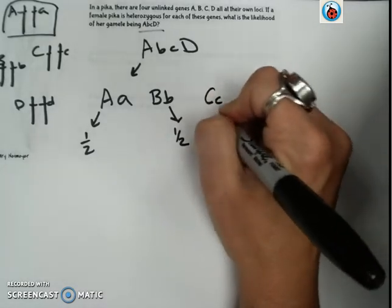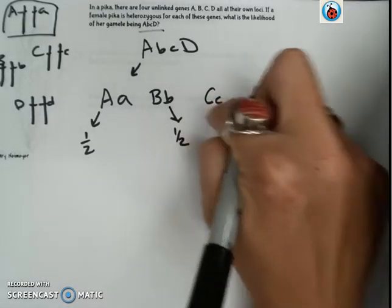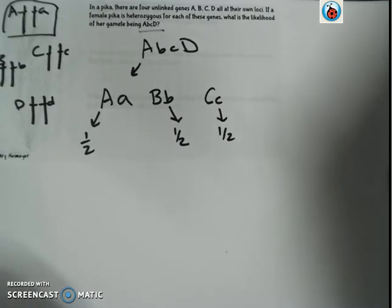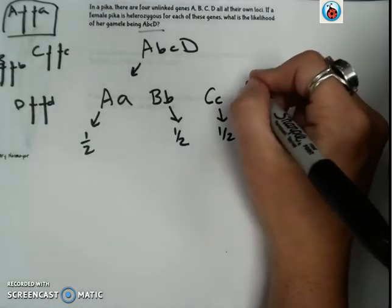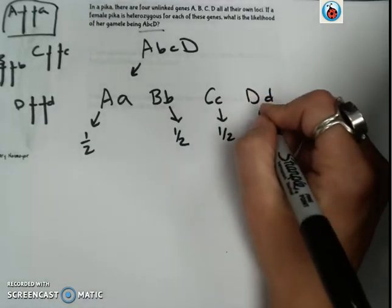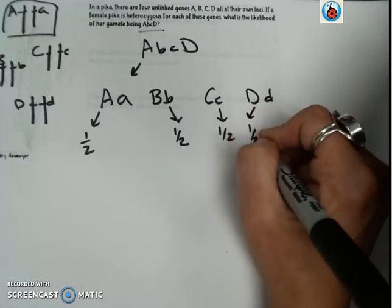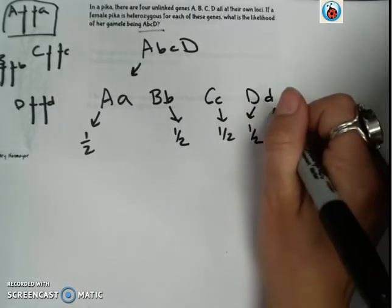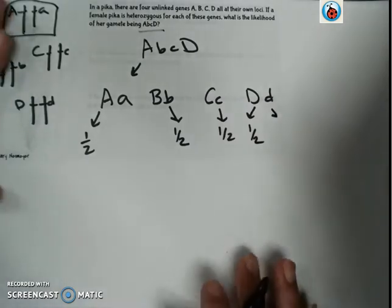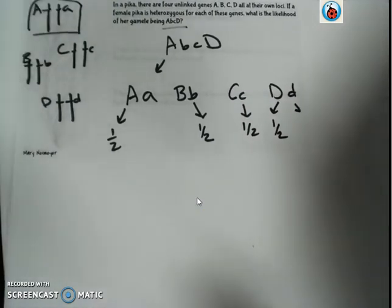She is also heterozygous for the C trait. And there is a one half chance it will inherit the recessive allele for C. And for D, again, one half chance that it will inherit the recessive allele for that. Now if you are thinking, why is there one half chance? I am not really sure why she is saying this.